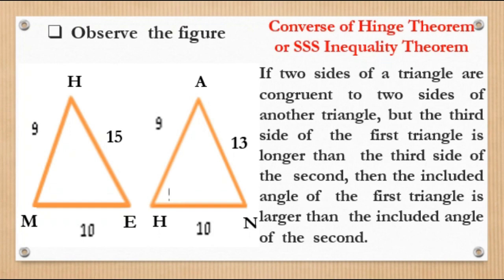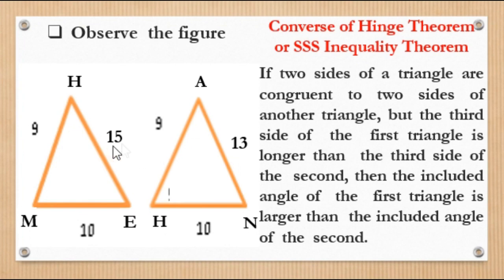The Converse of the Hinge Theorem, or SSS Inequality Theorem, states: if two sides of a triangle are congruent to two sides of another triangle but the third side of the first triangle is longer than the third side of the second, then the included angle of the first triangle is larger than the included angle of the second. In the figure, the two sides are congruent, but the third side of the first triangle is 15 while the third side of the second is 13. Therefore, the included angle of the first triangle is larger.